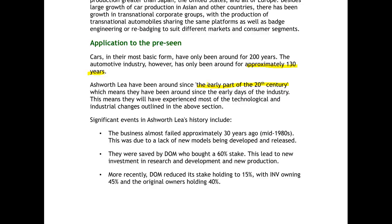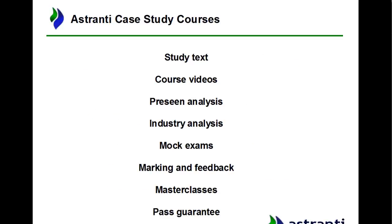There are a few significant events in Ashworth Lee's history worth noting. The business almost failed approximately 30 years ago, around the mid-1980s, due to a lack of new models being developed and released. They were saved by a company called Dom, another car manufacturer, who bought a 60% stake and made major changes — investing in research and development and producing new cars, which brought Ashworth Lee back. More recently, Dom reduced their stake to only 15%. Now one of the bigger investors is an investment group which owns 45%, and the original founders' relatives hold 40%.